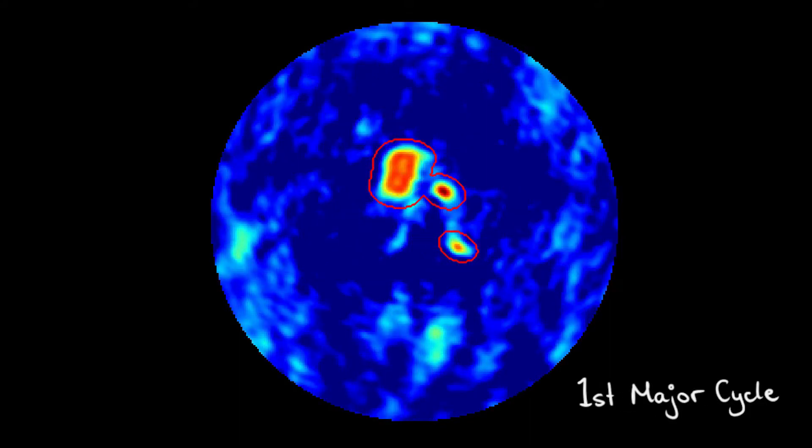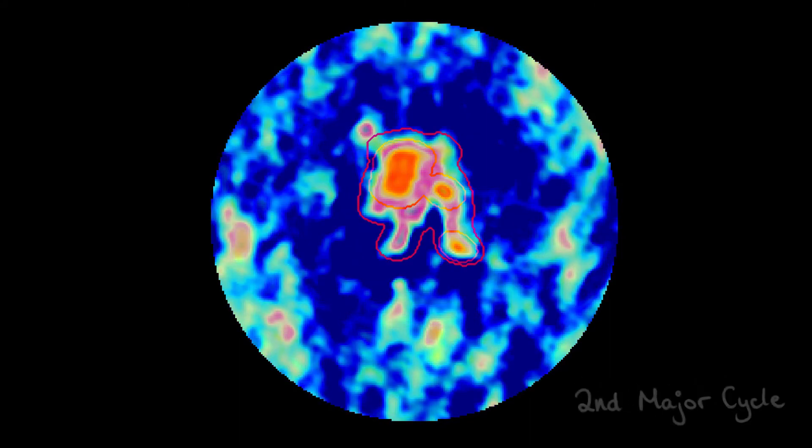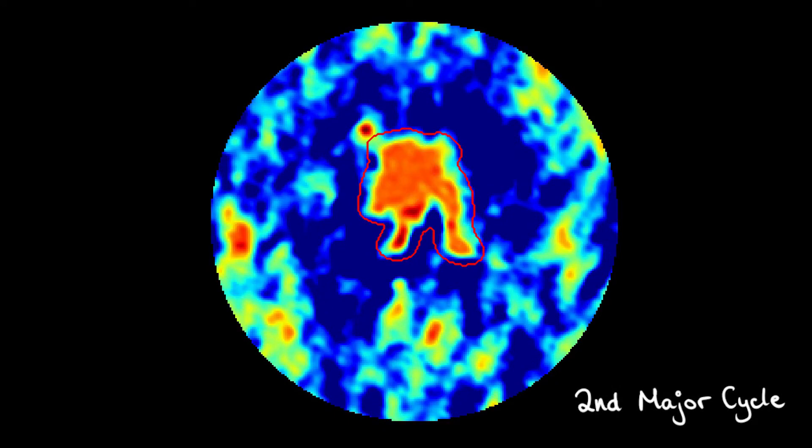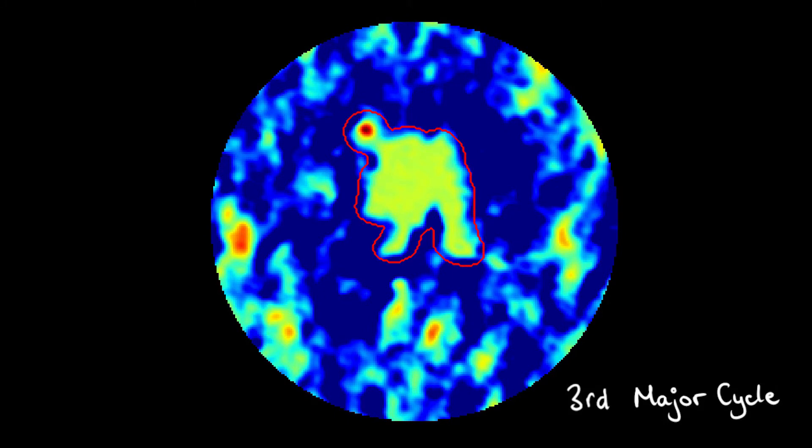Here we show the evolution of the mask over the first few major cycles of clean for NGC 6334I. Notice the buffer region around the emission, which allows clean the flexibility it needs in building up the model.